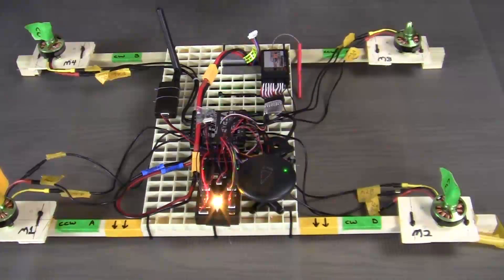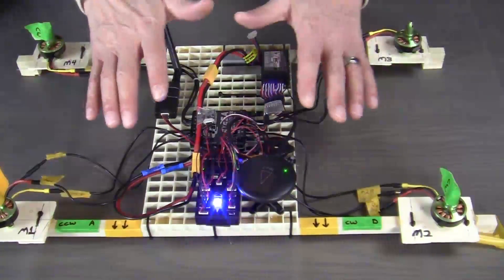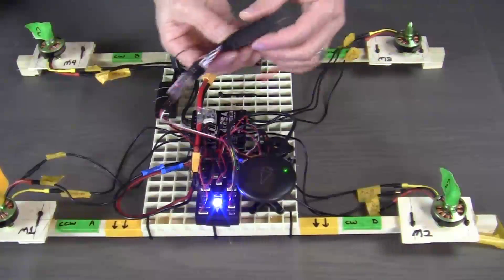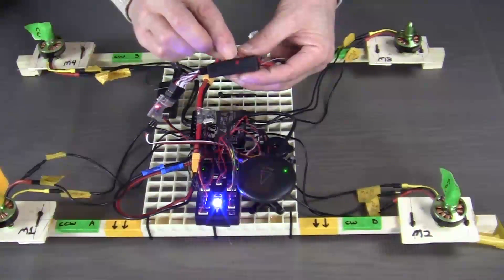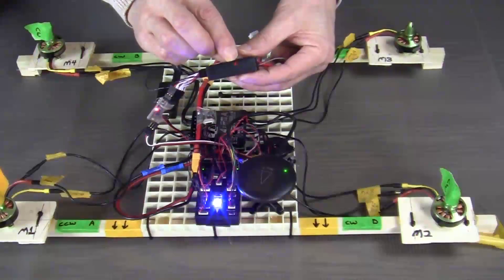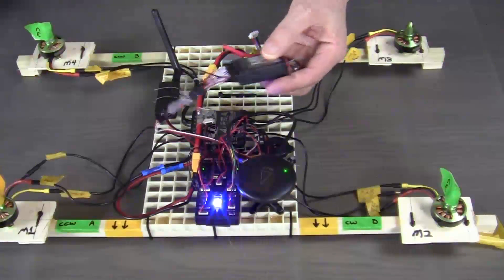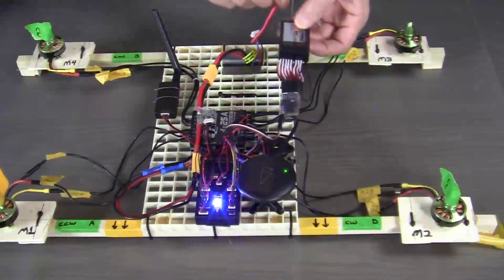Yeah, isn't that a wonderful sound? Once we have power to the system, then you'll notice that on the receiver, this light is flashing. That means that the receiver and the transmitter are not bound together yet.